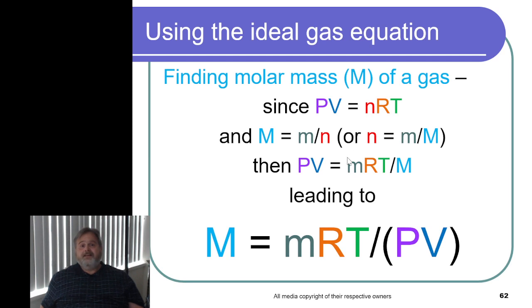which means we can now take n and replace it with mass divided by molar mass. And by doing that, what we find is the molar mass of an ideal gas is going to be the mass of the gas sample times RT